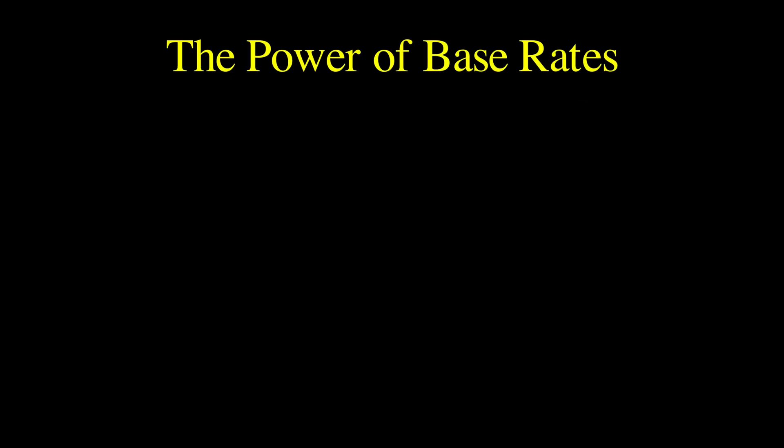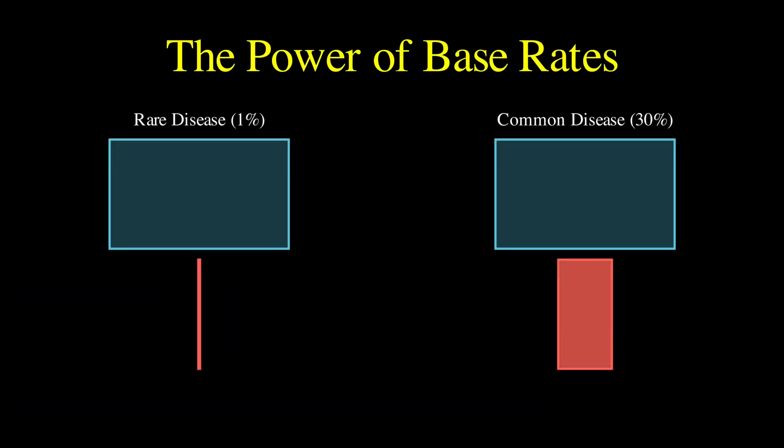Now, here's what really drives home the importance of base rates. Imagine the same 99% accurate test, but for a disease that affects 30% of people instead of 1%. With this more common disease, if you test positive, you'd be about 97% likely to actually have it, much higher compared to the 50% you get when you test positive for a rare disease. Same test, same accuracy, but completely different meaning, because the base rate changed everything.